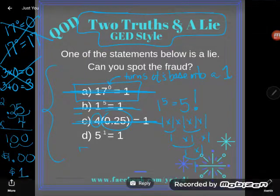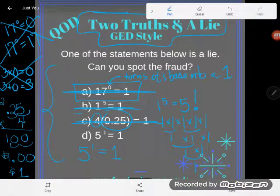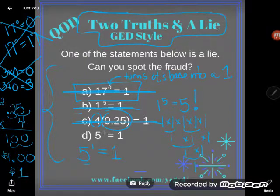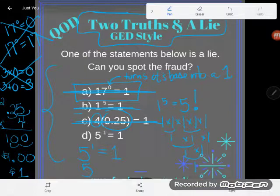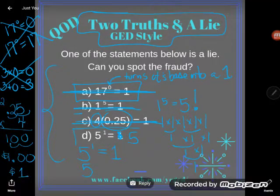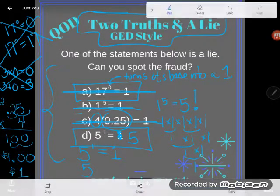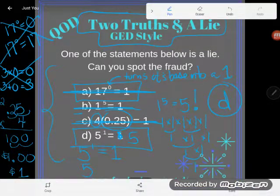So, oh my gosh, d must be a lie. Let's make sure it is. This d says five to the first power is one. Let us evaluate that statement. What does it mean to take something to the first power? It means you have just one of that particular number. So five to the first power means I just have one five, and of course just one five is not one. Five is five. And so five to the first power should have been five, not one. And therefore d was the lie all along.